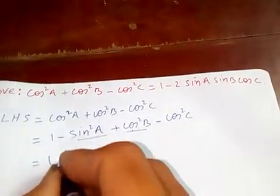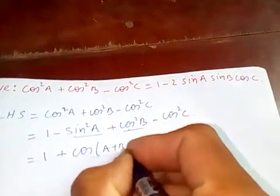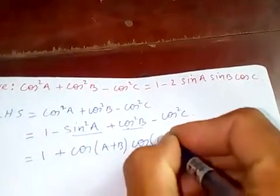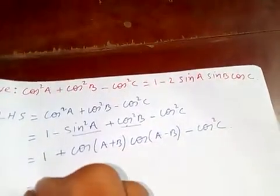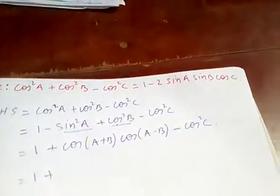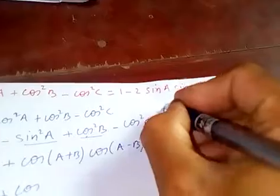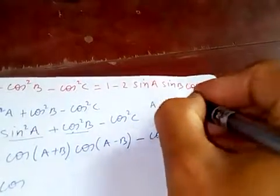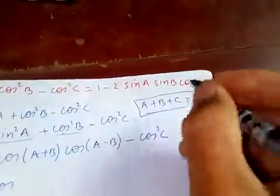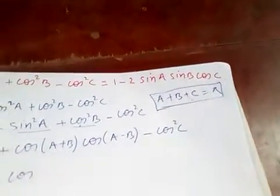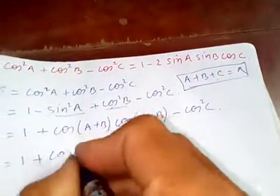and minus cos²C, which is 1 + cos(A+B). So we know A+B+C is equal to π because in any triangle sum of angles is 180°